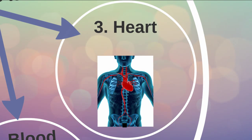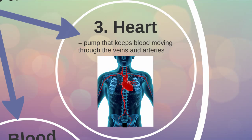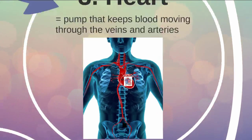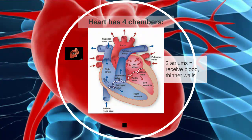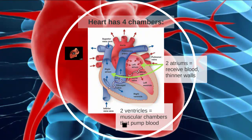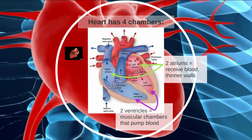The last part of the system is the heart — the pump that keeps blood moving through the veins and arteries. The heart has four chambers: two atria, which are the chambers that receive blood and have thinner walls, and two ventricles, which are the muscular chambers that actually pump the blood. The muscle is much thicker around the ventricles than around the atria, because the ventricles need to contract and pump blood through the body.